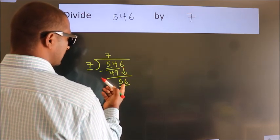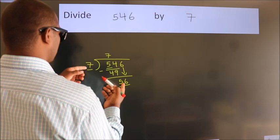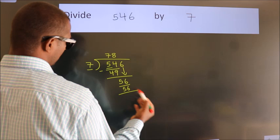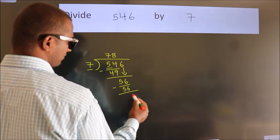When do we get 56 in the 7 times table? 7 eights is 56. Now we subtract. We get 0.